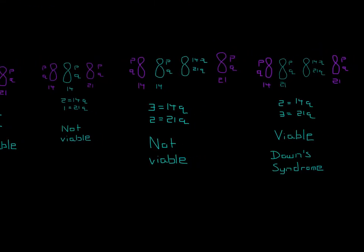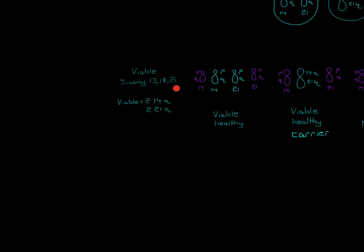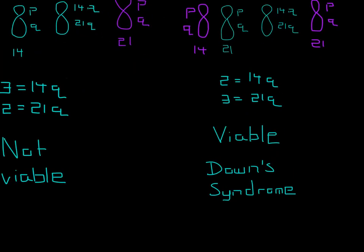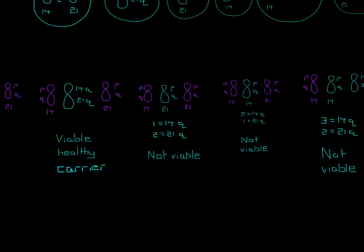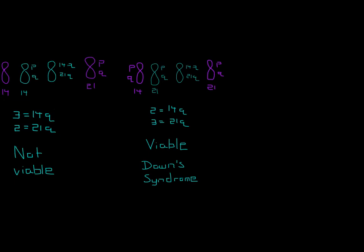Moving on to the fifth combination: dad contributes a normal 14 plus the Robertsonian translocation. Counting up — one, two, three 14qs — so trisomy 14, and two 21qs. Trisomy 14 is not on the viable list; only trisomy 13, 18, and 21 are viable. So this child will not be viable. For the final combination — dad contributes a normal 21 plus the Robertsonian translocation — we count two 14qs and three 21qs: trisomy 21. That is viable, so this child will be viable. However, this child will be afflicted with Down syndrome.